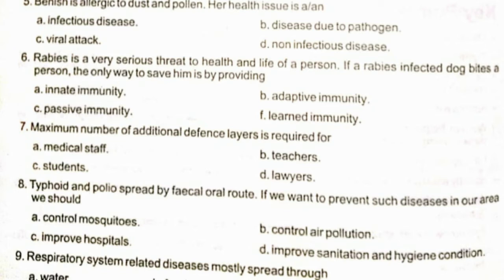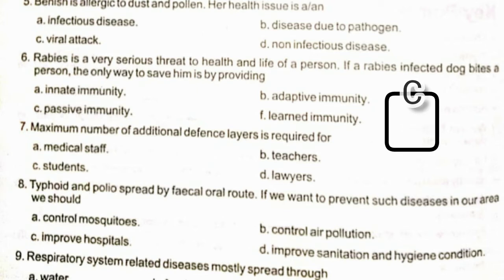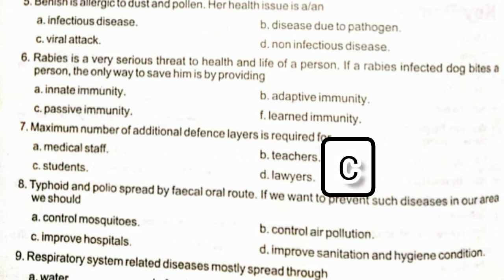Rabies is a very serious threat to the health and life of a person. If a rabies-infected dog bites a person, the only way to save him is by providing Option C: passive immunity.